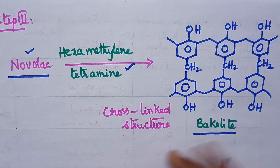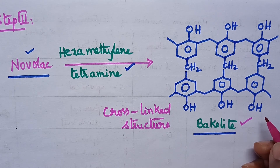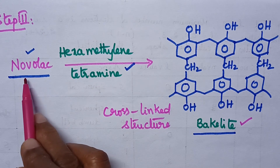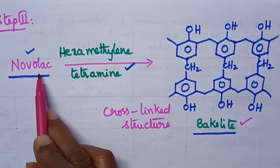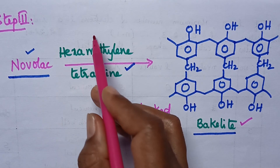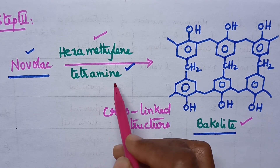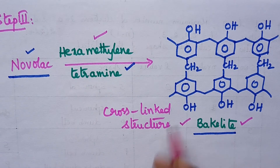Bakelite can be prepared through condensation polymerization and it involves three steps. In the third step, novolac undergoes cross-linked polymerization in the presence of hexamethylenetetramine as the catalyst, and finally it results in the formation of Bakelite.